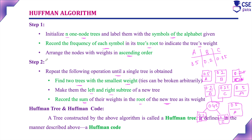We continue until we get a single tree. Adding the two remaining trees — 0.45 and 0.5 — gives a root of 0.95, and we now have a single tree. This is the Huffman tree. For the entire tree, the left subtree is labeled 0 and the right subtree is labeled 1 at every level. The tree constructed by the Huffman algorithm is called the Huffman tree, and the codes assigned using this tree are called Huffman codes.